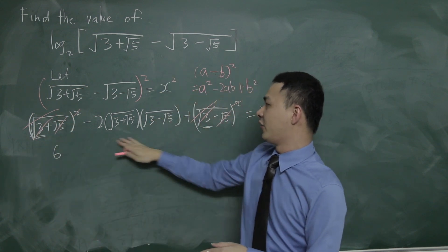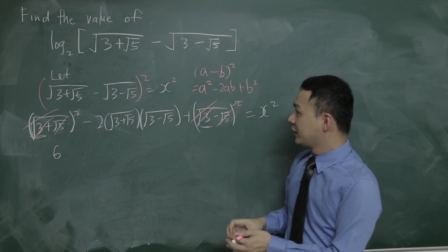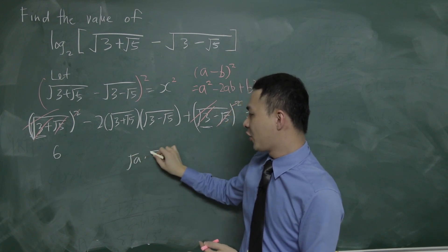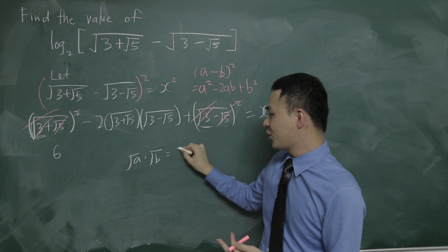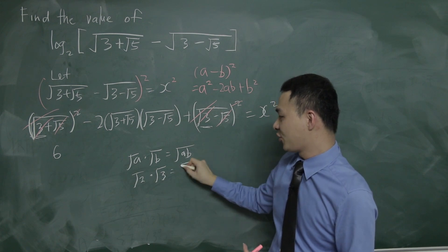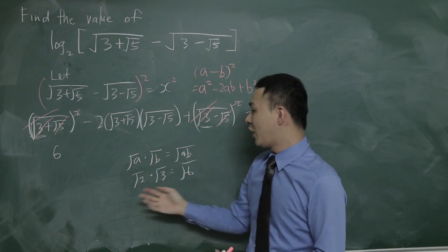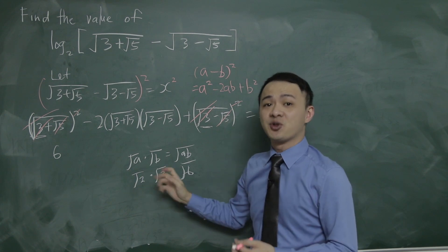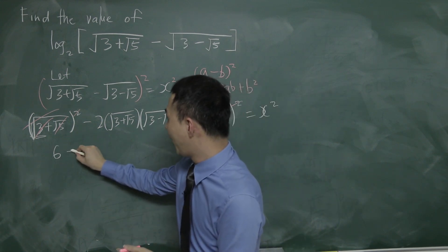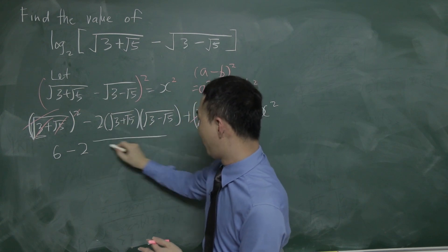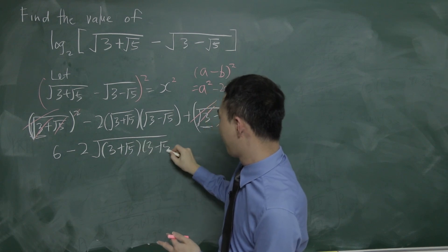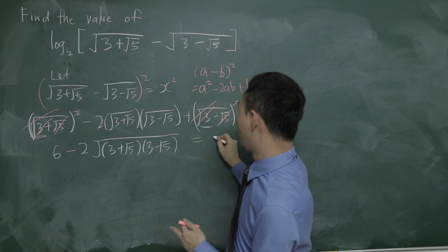Now I need to handle the middle term, −2ab. When you multiply √a × √b, you get √(ab). So multiplying √(3+√5) × √(3−√5) gives √[(3+√5)(3−√5)]. I place the whole product under a single square root, giving −2·√[(3+√5)(3−√5)] = x².